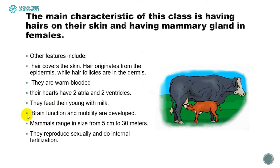Their brain is highly developed with different functions. Their size can range from five centimeters up to 30 meters. Another important thing about mammals is that sexes are separated — they have male and female. They perform internal fertilization, so the process of fertilization happens inside the body of the female, where sperm and egg fuse with each other. Then the female can give birth to a new offspring.